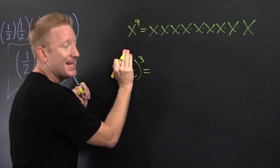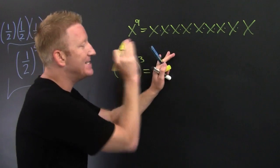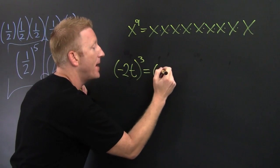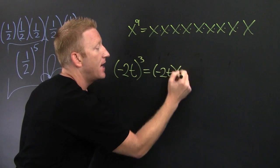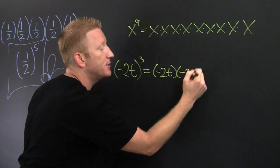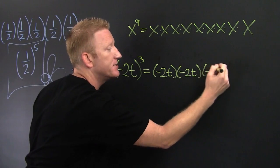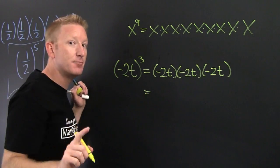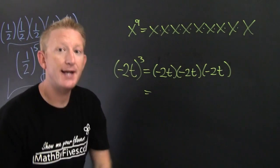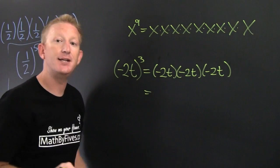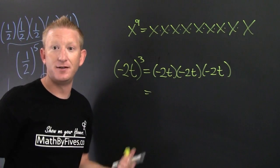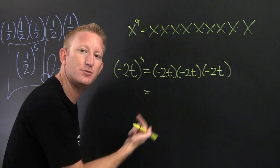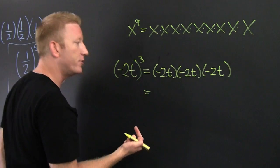It's like hand to the third power, so it's going to be hand times hand times hand. So then this is going to be minus two t, times minus two t, times minus two t. And then we are multiplicating — so it's minus two times minus two times minus two, because we commute all those guys.